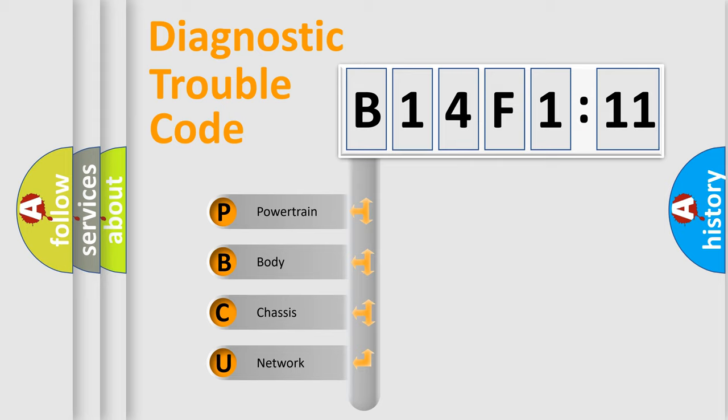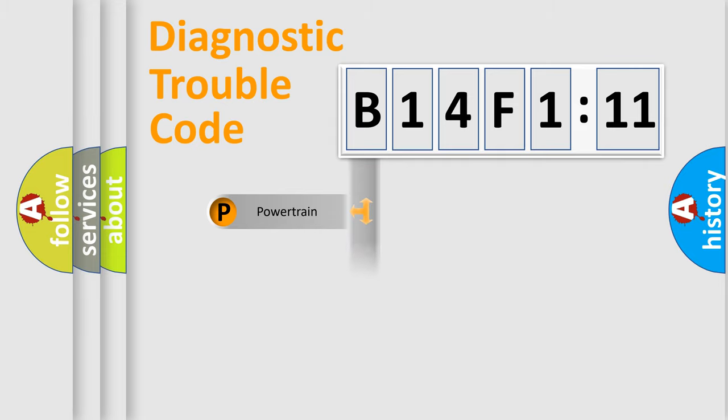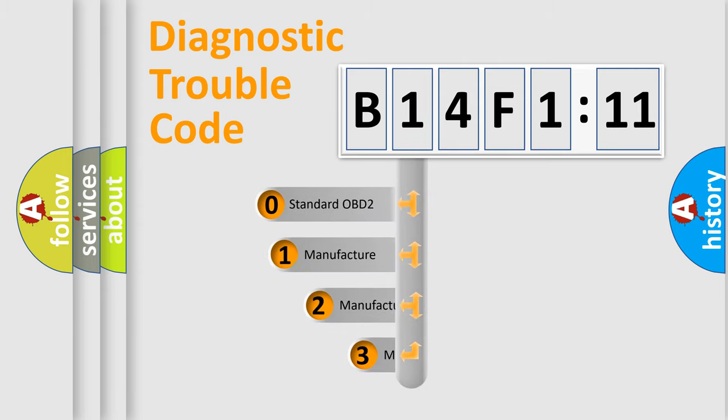We divide the electric system of automobiles into four basic units: Powertrain, Body, Chassis, and Network. This distribution is defined in the first character code.